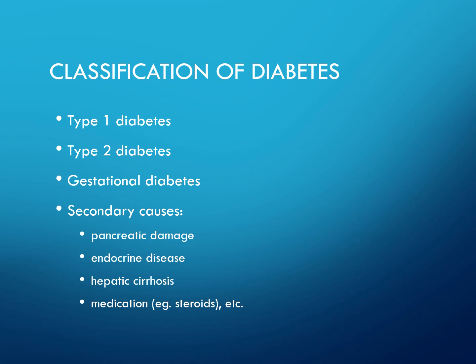There are different types of diabetes: type 1, type 2, gestational diabetes, and secondary causes such as pancreatic damage, endocrine disease, hepatic cirrhosis, and medications such as steroids.